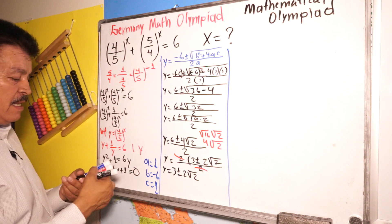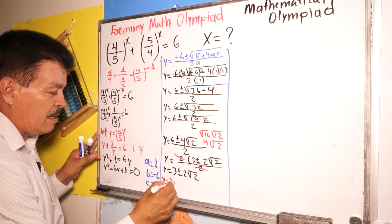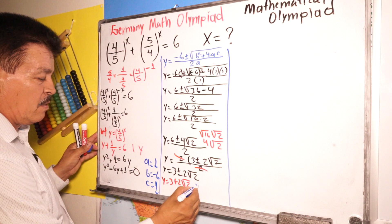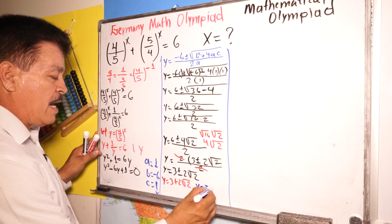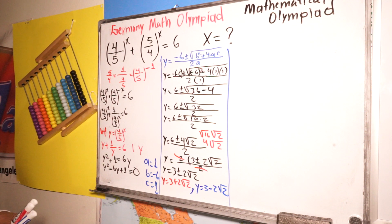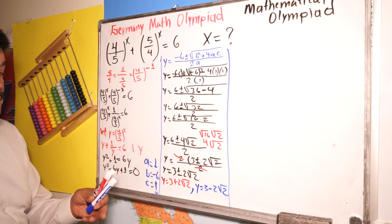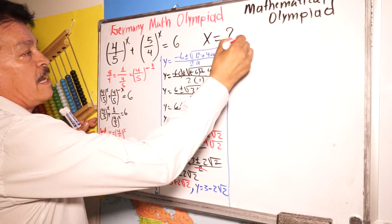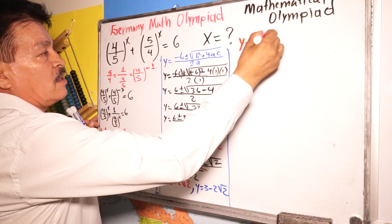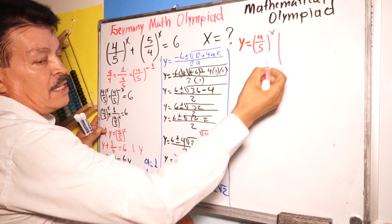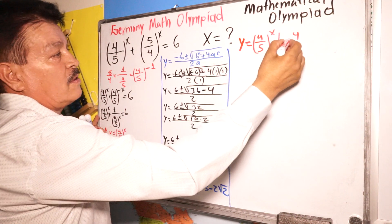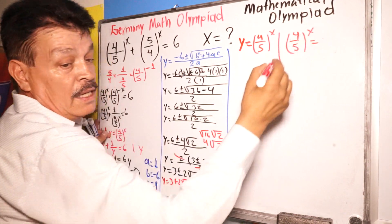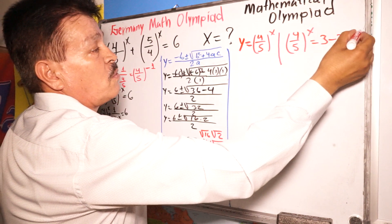So one way: Y equals three plus two square root two, and the other one: Y equals three minus two square root two. Now remember, Y equals four-fifths to the X power. So on one side, four-fifths to the X power equals three plus two square root two, and on the other side, four-fifths to the X power equals three minus two square root two.